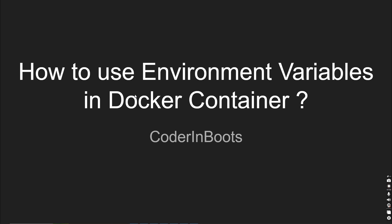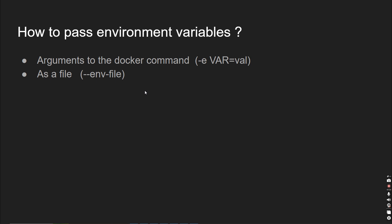This is not the same as build variables. Build variables are passed to the Dockerfile at the time of build — that is different. Environment variables are the variables that get passed to the container at the time of run.